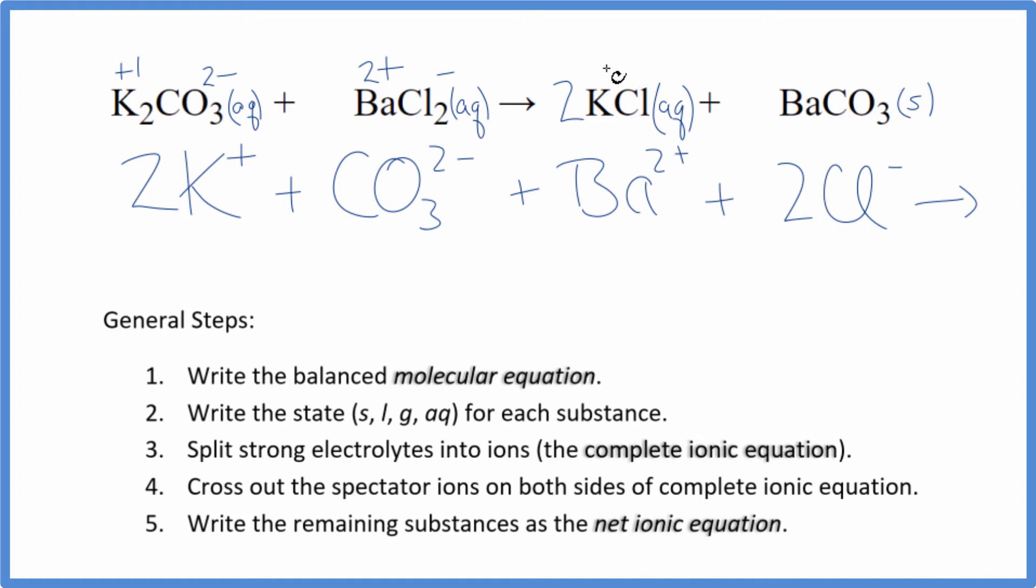For the products, we have plus and minus. So we have two potassium ions, just like in the reactants. Two chloride ions, same there again. And then for net ionic equations, we don't split apart solids. So we're just going to keep this as BaCO3. So this is the total or complete ionic equation.